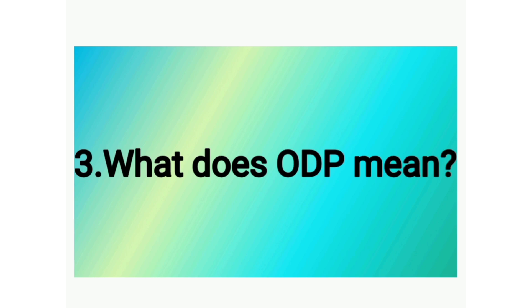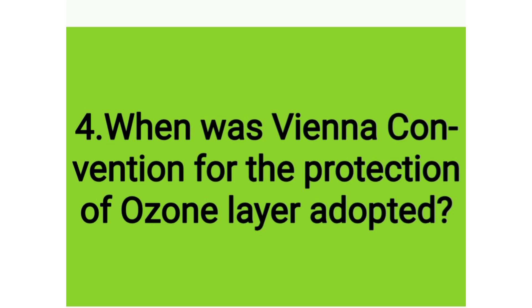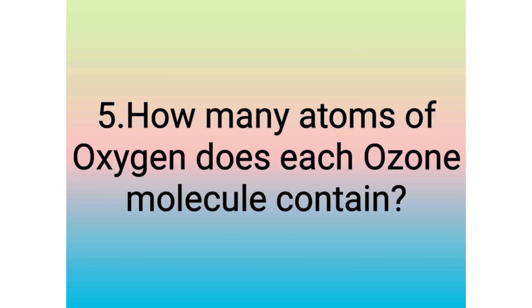Question 3: What does ODP mean? Answer: Ozone Depleting Potential. Question 4: When was the Vienna Convention for the Protection of the Ozone Layer adopted? Answer: 1985. Question 5: How many atoms of oxygen does each ozone molecule contain? Answer: 3 atoms.